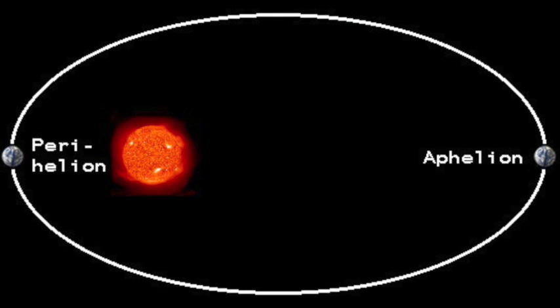And the aphelion, or the longest distance from the Sun in the planet's orbit, is 600 to 1200 astronomical units. This is unimaginably far.